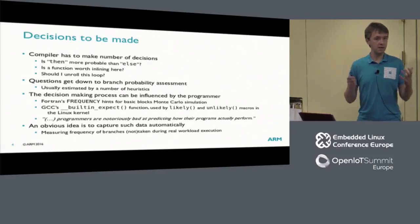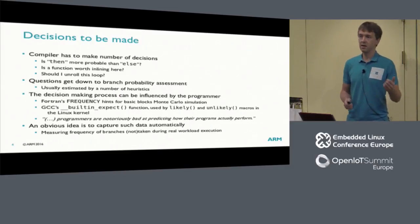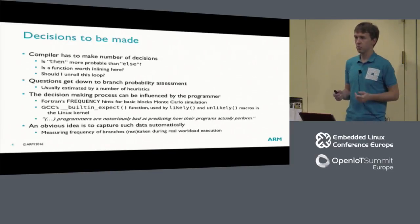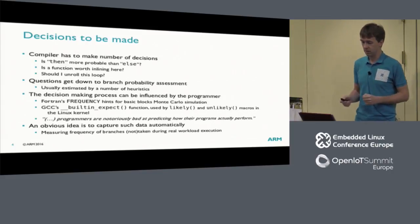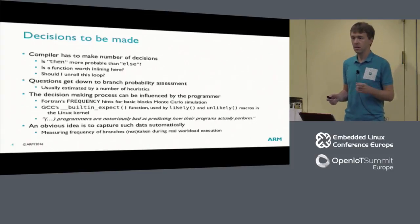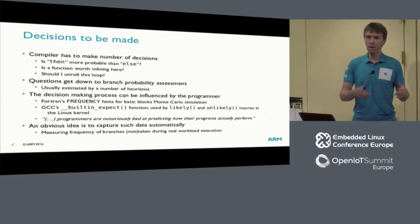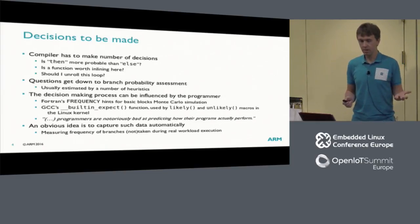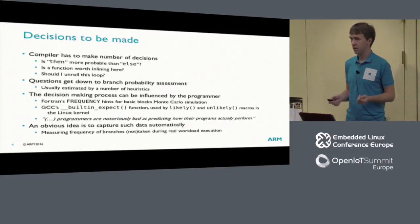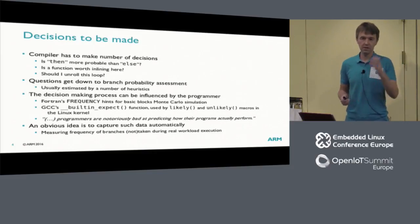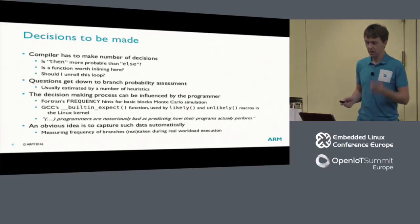The first and obvious decision the compiler has to make is to answer the question: is 'then' more probable than 'else'? If you have a simple if statement with a condition, one possible outcome or the other, the compiler has to decide which one to consider more optimal and optimize for. We'll see an example later. Is a function worth inlining? That's an incredibly important question — most compilation tool performance increases come from proper function inlining. And the other classic question is: should I unroll the loop? Unrolling the loop means generating multiple loop bodies in series to resolve resource conflicts.